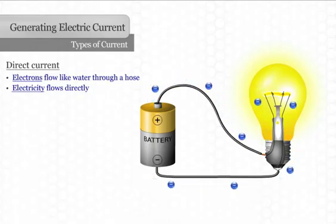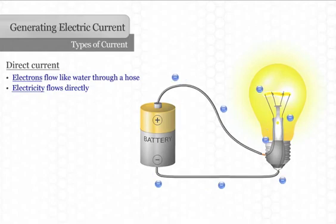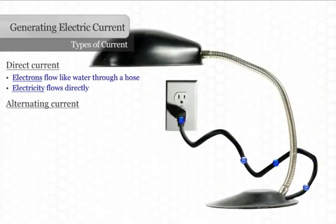An electric current can also be produced in another way called alternating current. With alternating current, electrons quickly move back and forth within the wire. As long as the electrons are continually moving, an electric current exists.